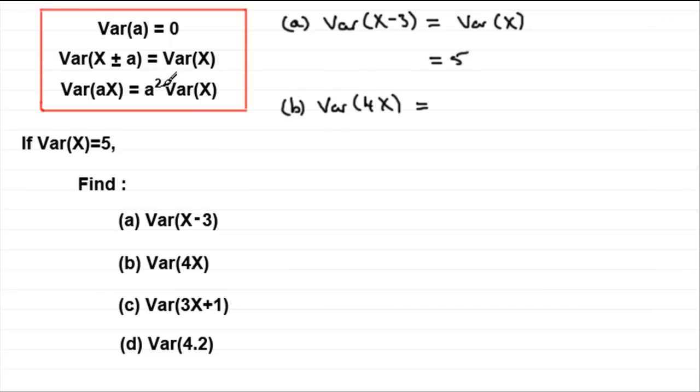So, in other words, this is going to be 4 squared, or 16, 16 times the variance of X. So, we get 16 times the 5. 16 times 5 is 80.